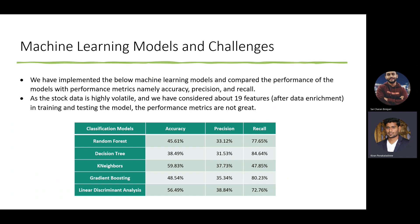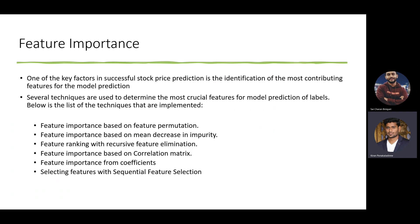To overcome this challenge, we focused mainly on feature importance and explainability of the model. Feature importance helps us identify the most contributing features for model prediction so that we can retrain the model only with those features. The techniques we followed include feature importance based on feature permutation, mean decrease in impurity, recursive feature elimination, sequential feature selection, and others.